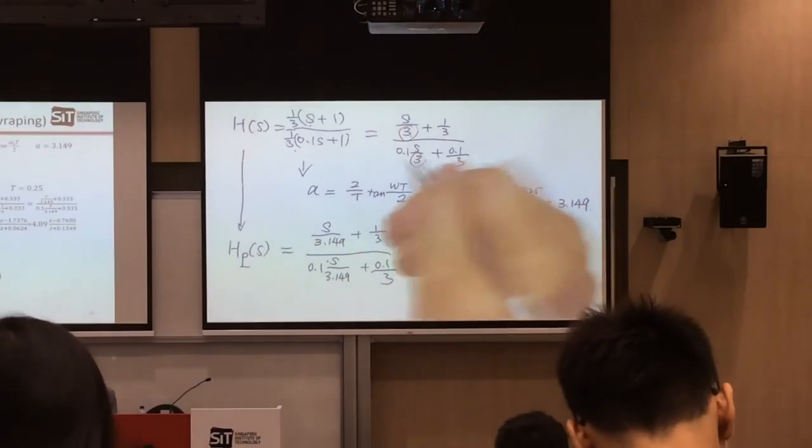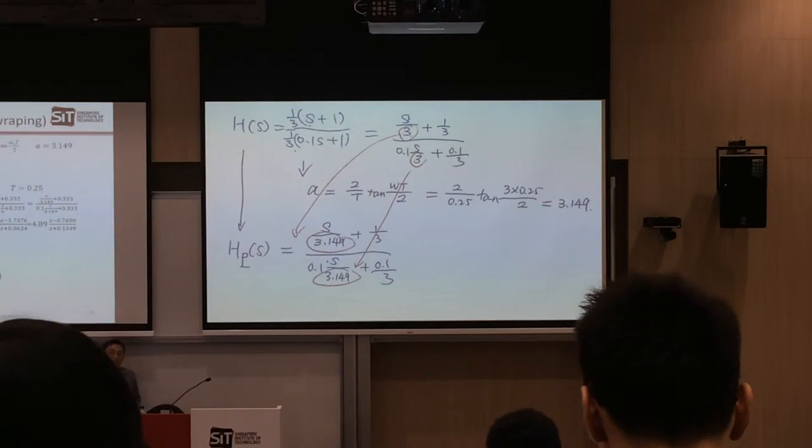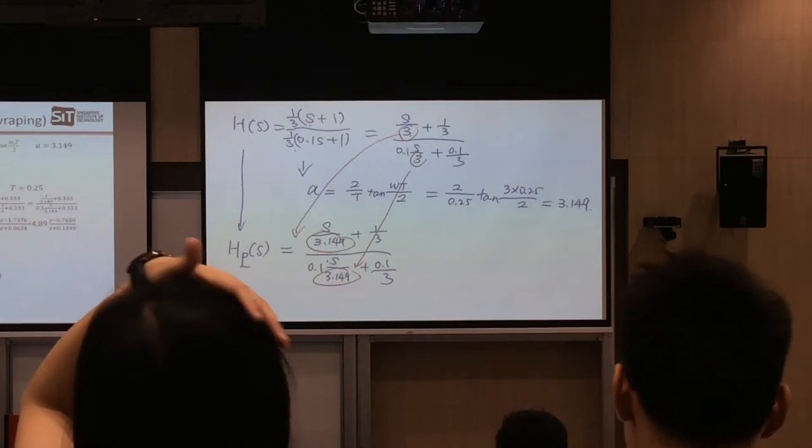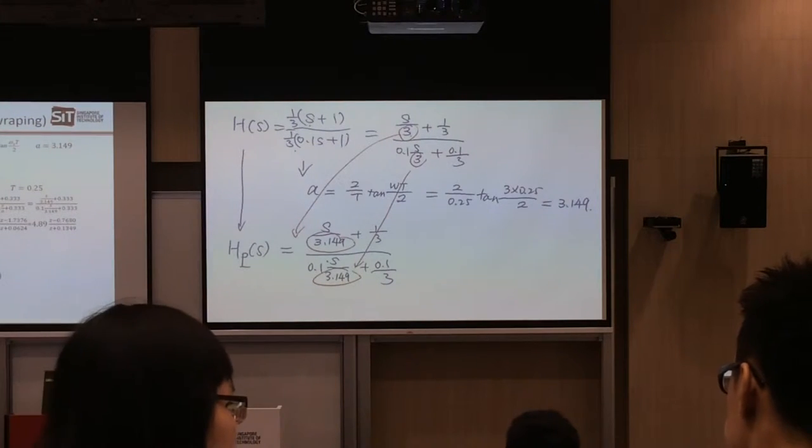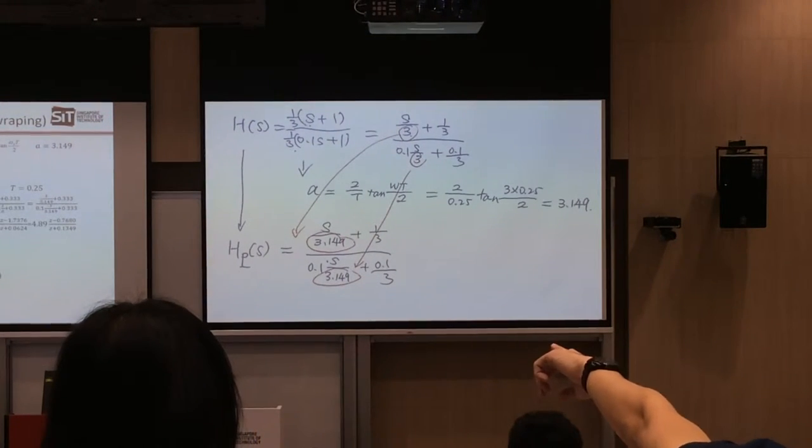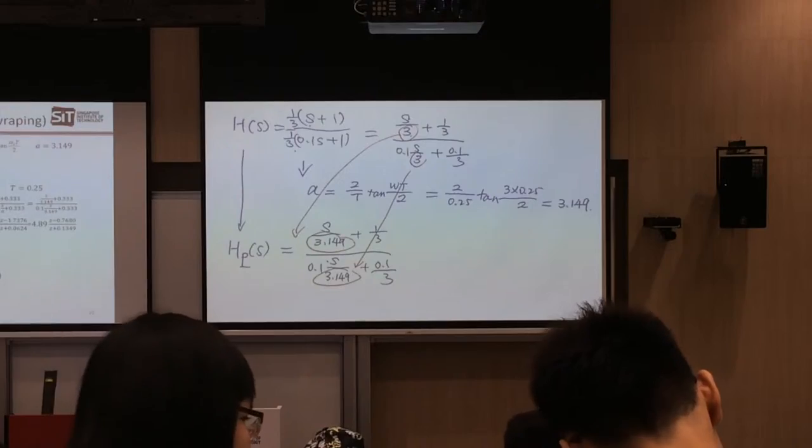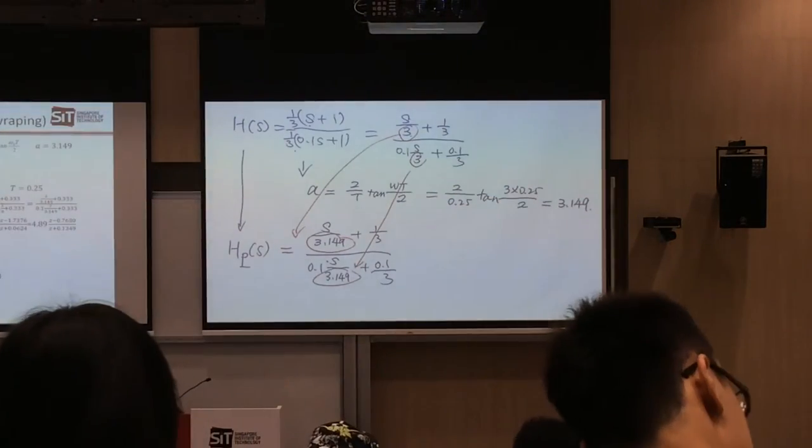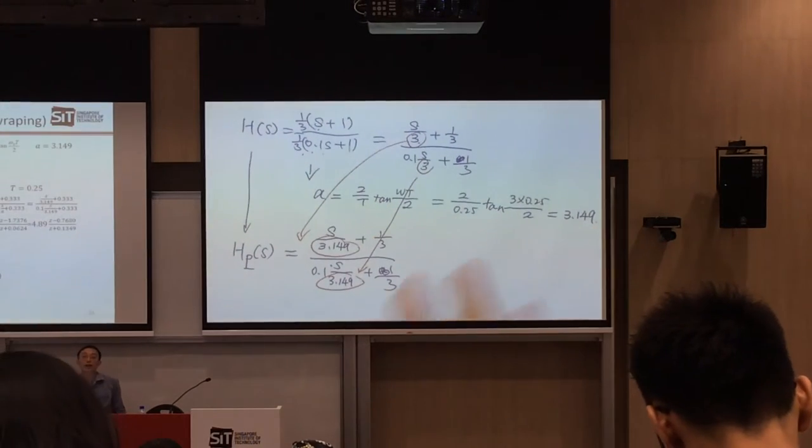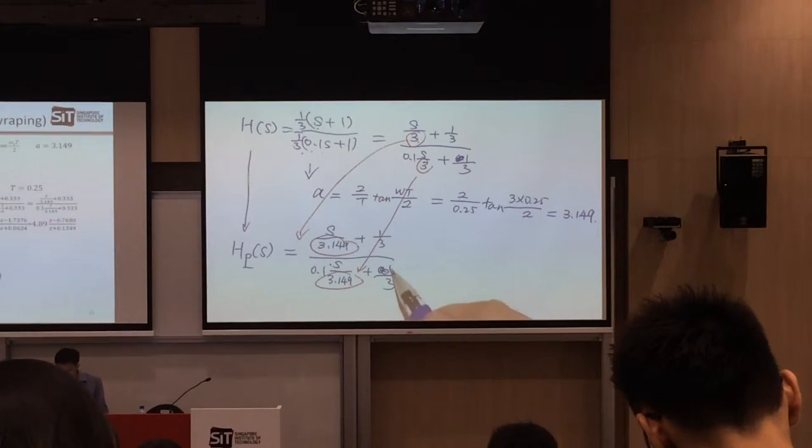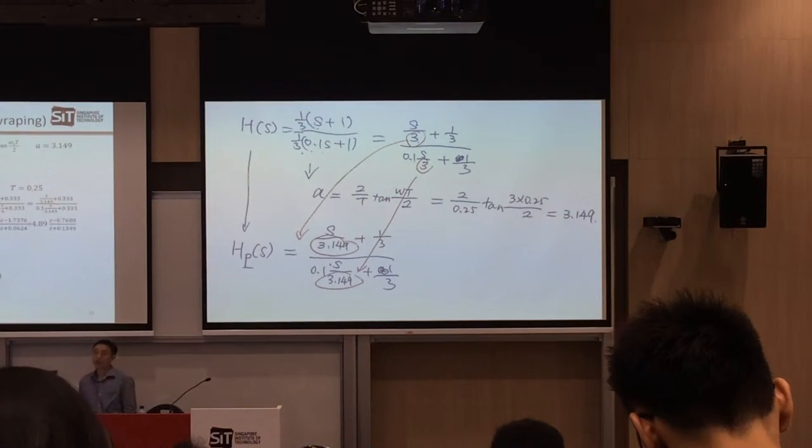So, basically, what is the change? The only change is, I replace your omega, which is 3, by a pre-warping. So, this is 2 and 1, S to be a 1. So, this is what you can do. So, we have no problem with S to be a 1.